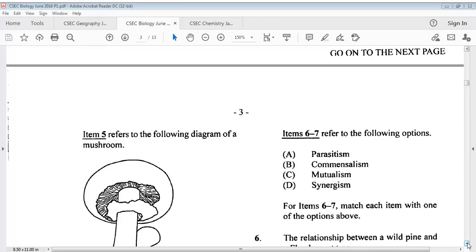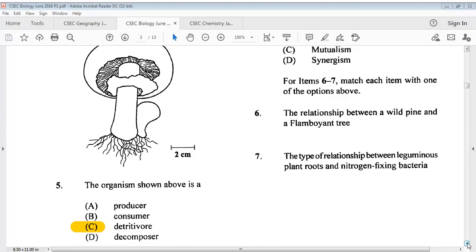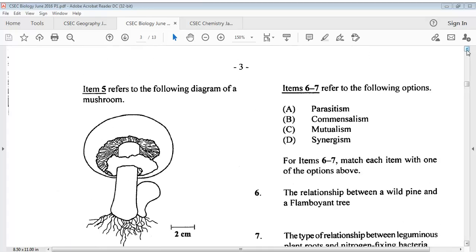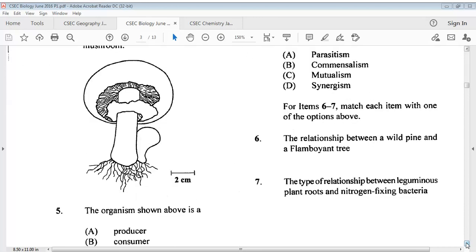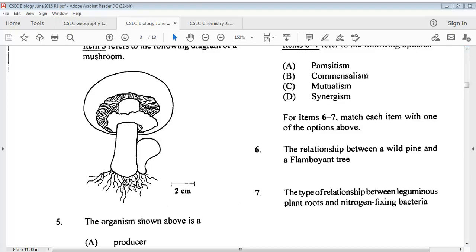For number 5, we have a diagram of a worm. The question says the organism shown above is. The answer for that is C. For questions 6 and 7, item 6 to 7 refer to the following options A, B, C and D. You are going to match each item with one of the options. Question 6 says the relationship between a Wilder Pine and a Flamboyant tree. The answer for 6 is B. Question 7 says the type of relationship between leguminous plant roots and nitrogen-fixing bacteria. The answer is C.